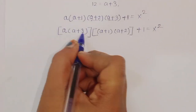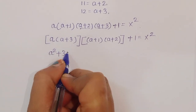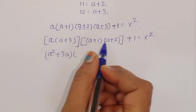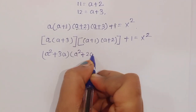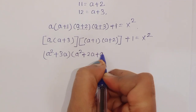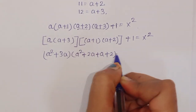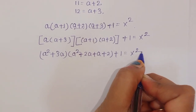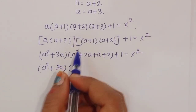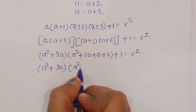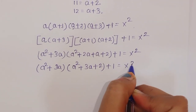When we expand: a times (a plus 3) gives a squared plus 3a, and (a plus 1) times (a plus 2) gives a squared plus 3a plus 2. So we have (a squared plus 3a) times (a squared plus 3a plus 2) plus 1 is equal to x squared.